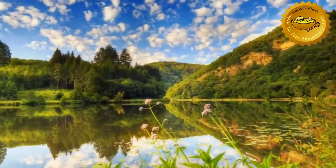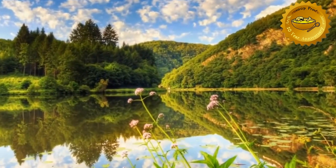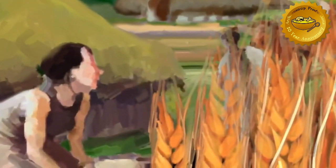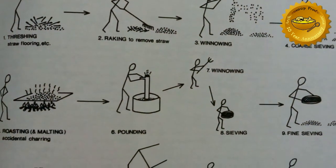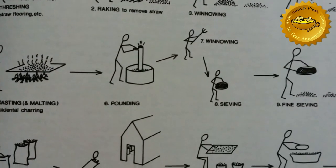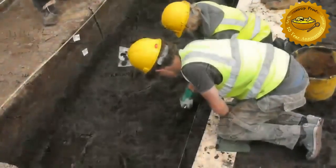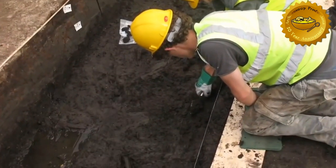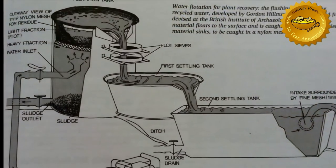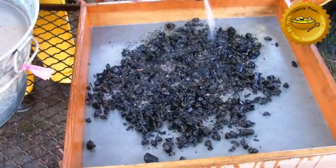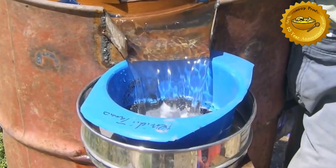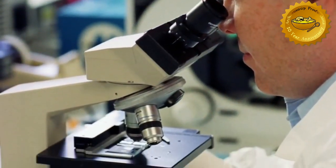Plant remains take many different forms. Archaeologists can tell a lot about past environments by studying the plants which thrived there. When people began farming, this adds a new layer of complexity to the relationship between people and their environment. Botanical remains survive best in waterlogged environments, and the soil can be processed through a series of sieves and water flotation tanks to release as much of the organic material as possible. The study of these remains can reveal a great deal about past environments, and great care is taken to recover them properly and then study them appropriately, often through a microscope.